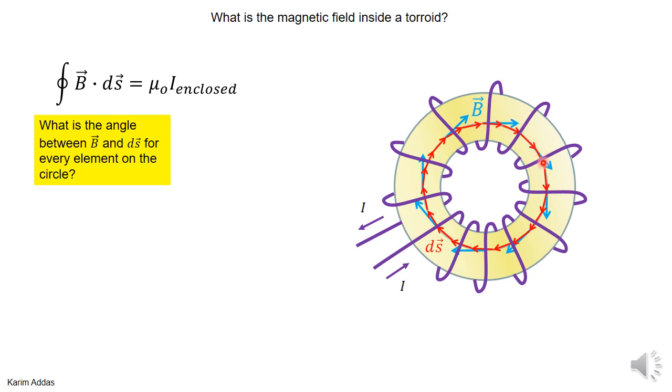Let's take the Amperian loop to be in the shape of a circle inside the toroid. And why do we do that? Because then the angle between the magnetic field and the ds vectors will be zero for every single element of length. So B dot ds becomes B ds - we got rid of the dot product.